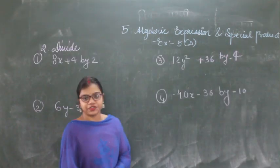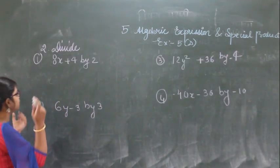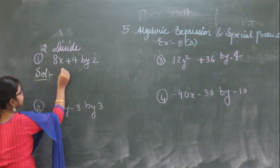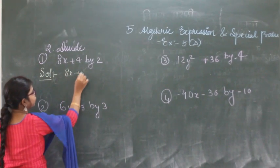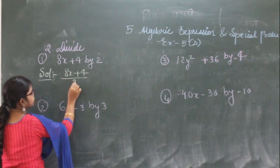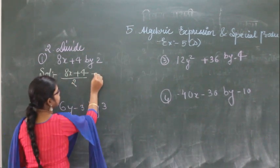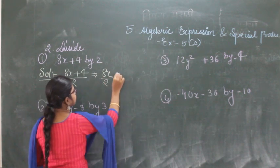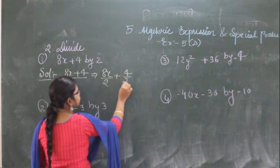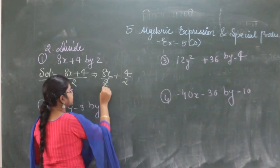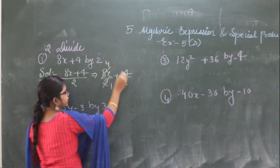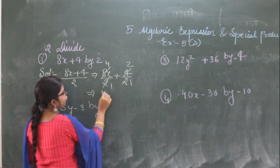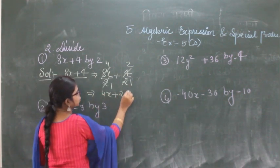Now for the division of polynomials section. The first question is 8x plus 4 divided by 2. You can split this as 8x divided by 2 plus 4 divided by 2. Cancelling, 8 divided by 2 is 4 and 4 divided by 2 is 2, so the answer is 4x plus 2.